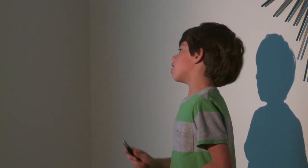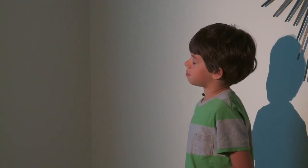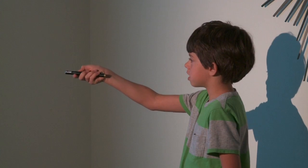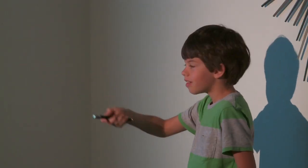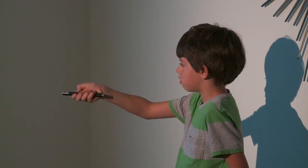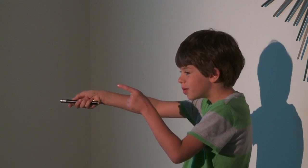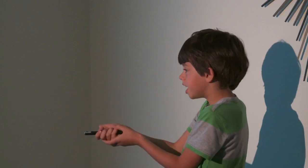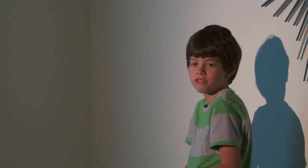Another very interesting occurrence of the Fibonacci sequence is in the family tree of a male bee. When a female on her own gives birth, she will create a male. When a female and a male reproduce together, they create a female. So we have one male, then one female, then two, then three, then five and eight — this also follows the Fibonacci sequence.